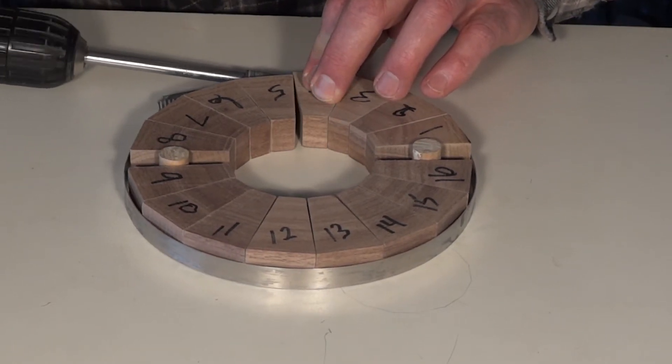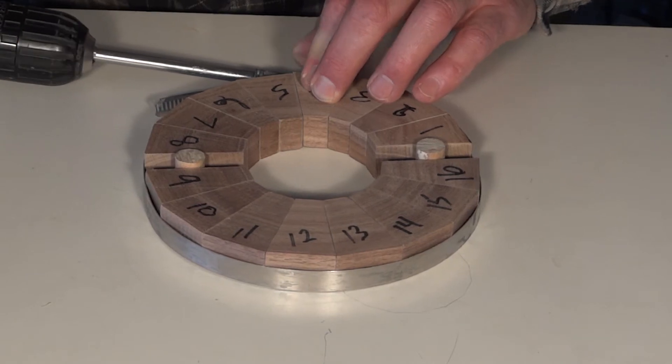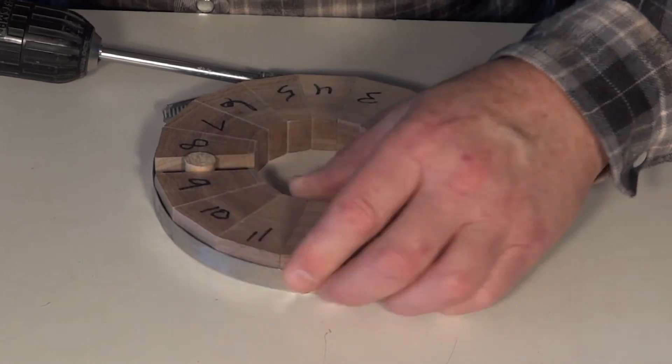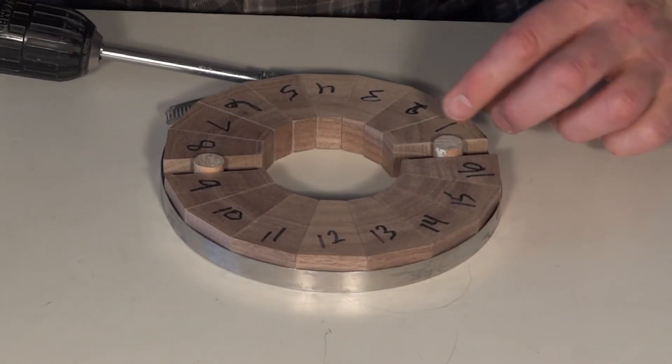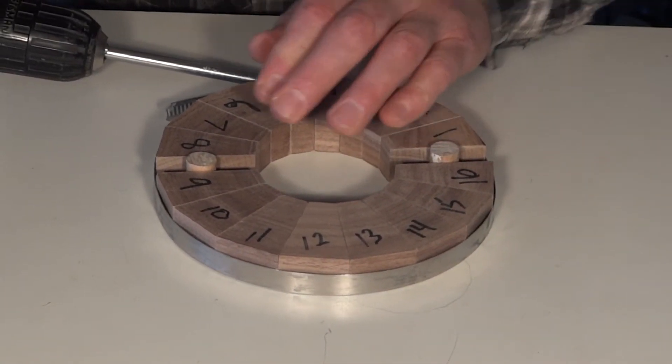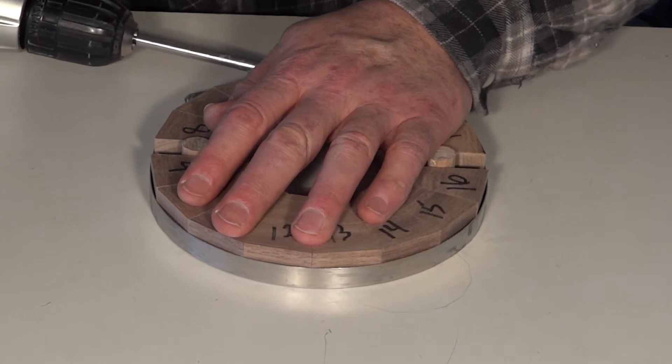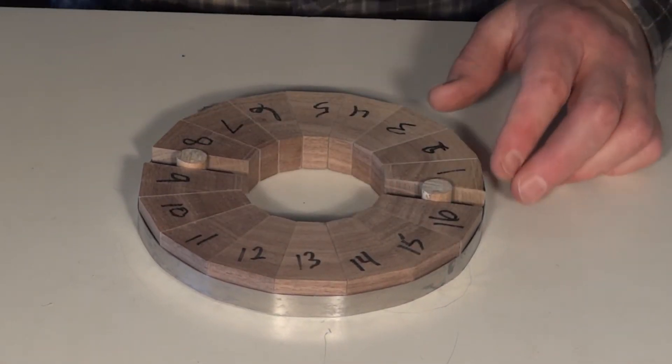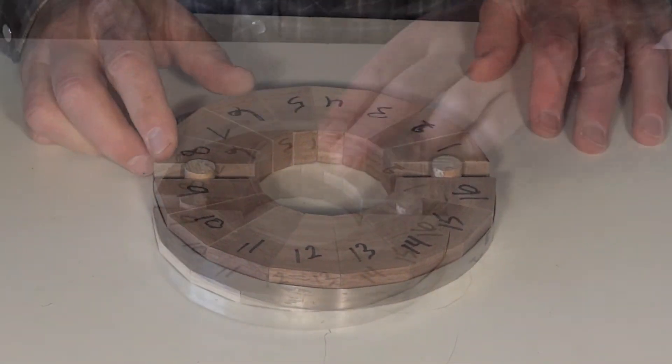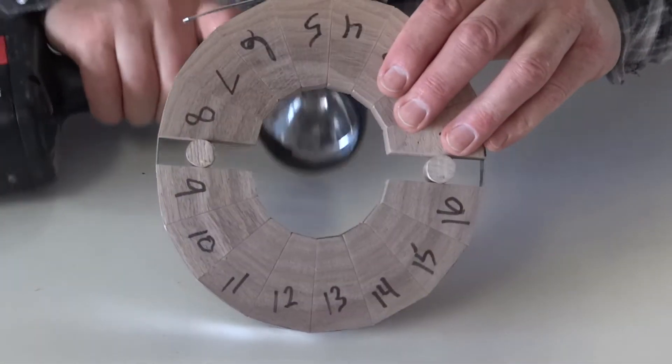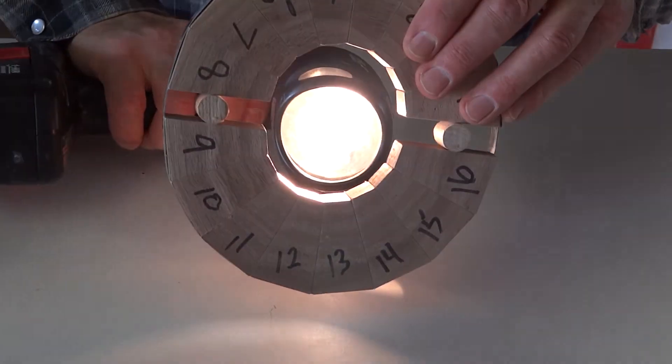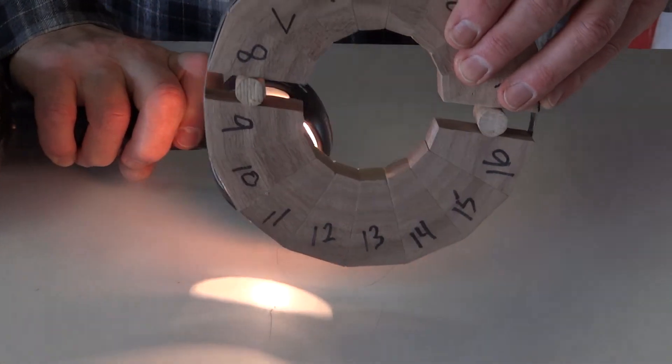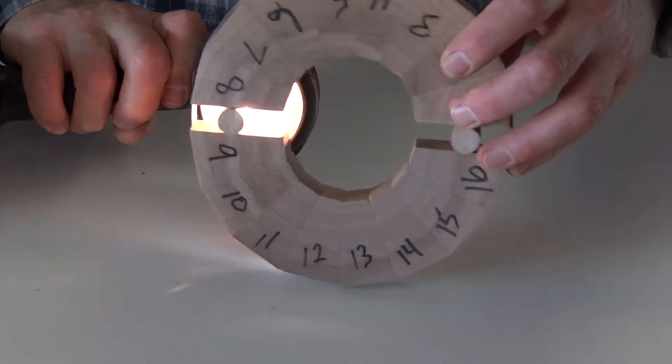Once you have done a dry fit to be sure it works, you can glue the other segments. As the flashlight shows, there are no gaps between the segments, and it is ready to be glued up.